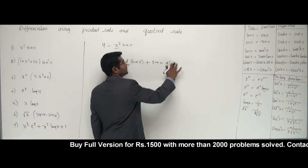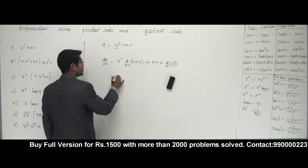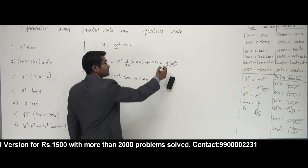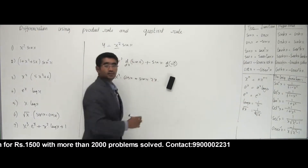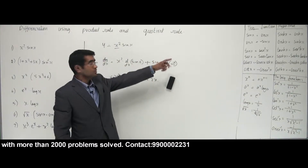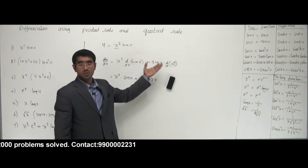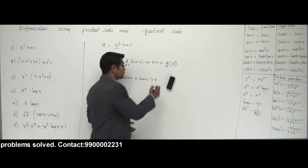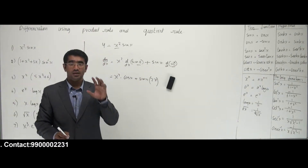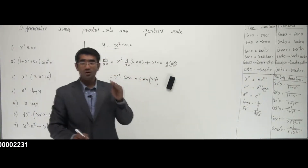So what we get is: x² · cos(x) plus sin(x) · 2x. Differentiating x² gives 2x using the power rule: bring the exponent down to get 2x. Keep in mind we are differentiating only one function at a time — that is the key to the product rule.